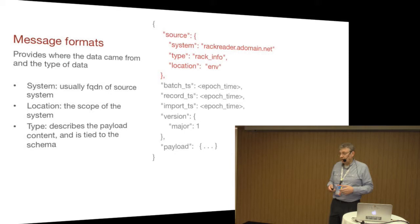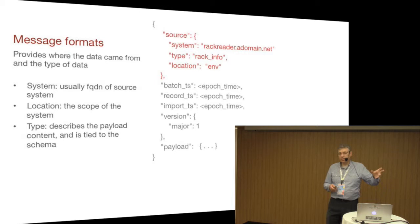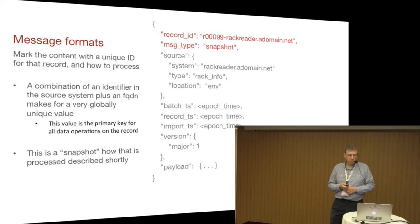We also want to know where it came from. We've got this idea of a system — we use the FQDN, which is pretty unique and nice. We're talking about the actual subtype of the data — in this case it's the rack info, not the rack contents. And then location, which would be — in this case we had environments one, two, and three — so it's like availability zone or data center or something like that, the ability to say where this is coming from.